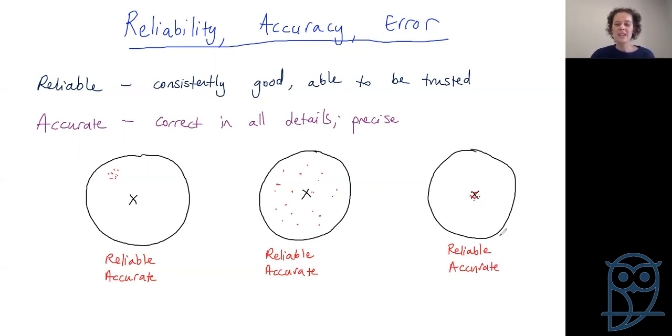The thing is that reliable means we are consistently good. We're able to trust it. It's going to do the same thing over and over again. So this first one is reliable. Absolutely. Because it's getting the same point over and over and over again. The second one, we are all over the show. Definitely not reliable. And the third one, yeah, we get the same thing over and over again.